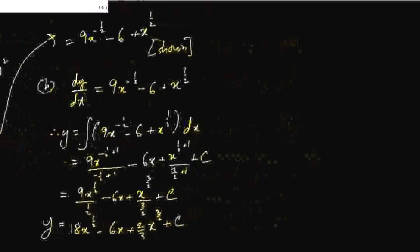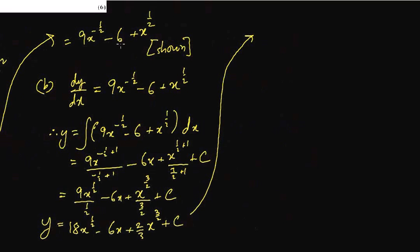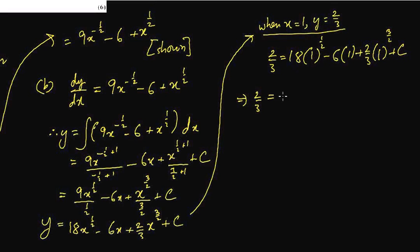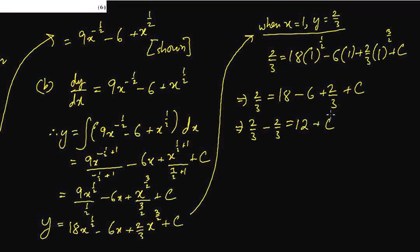So when x equals to 1, y equals to 2/3 — that information is given. Putting 2/3 equals to 18 times 1 to the power half, minus 6 times 1, plus 2/3 times 1 to the power 3/2, plus C. Now 1 to the power of anything is 1. So this is 18 minus 6 plus 2/3, plus C. Bringing everything to the other side: 2/3 minus 2/3, and 18 minus 6 is 12. So this cancels and becomes 0. Therefore C equals to minus 12.